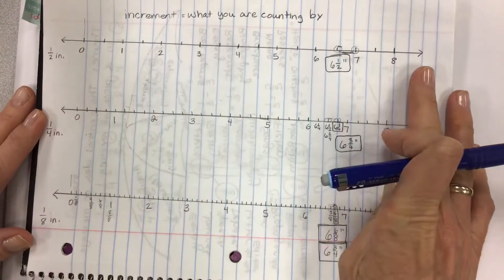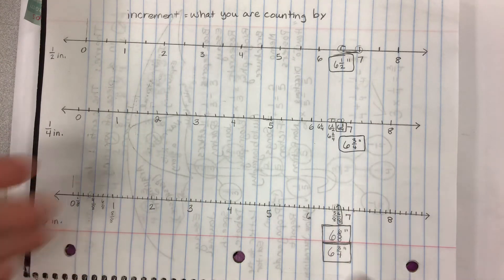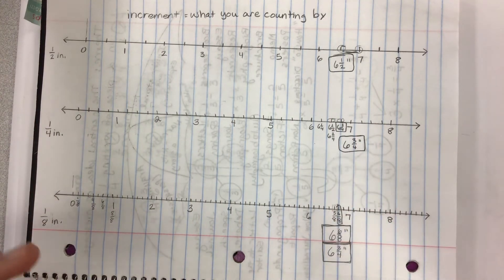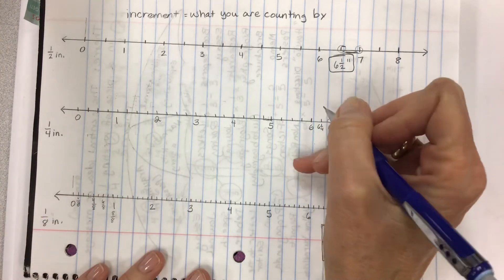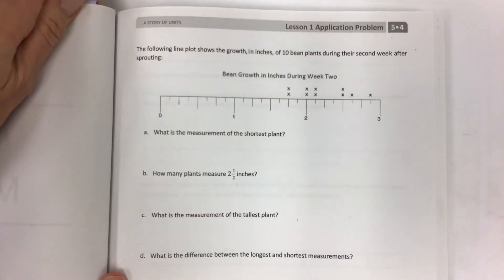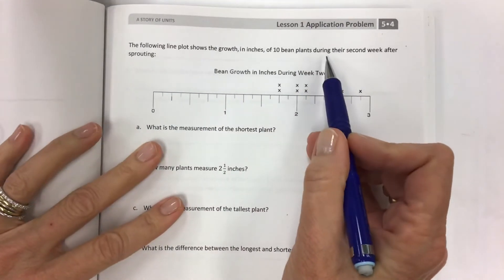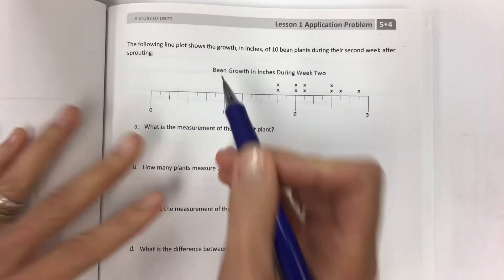So number lines are really important. And also when you have to create your line plot, you'll probably be told by the instructions how to label it, and then they'll give you a set of data. And that's where you decide where to put the X's above it. So just in case you're still wondering what a line plot looks like. Okay, so lesson one application problem, now that you know what a line plot is. The following line plot shows the growth in inches of 10 bean plants during their second week after sprouting. And so really important information.